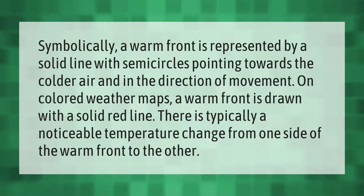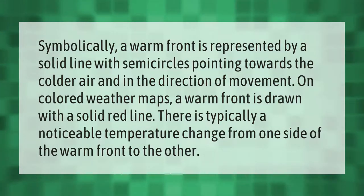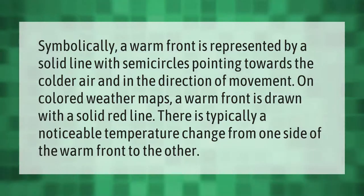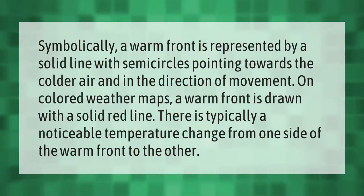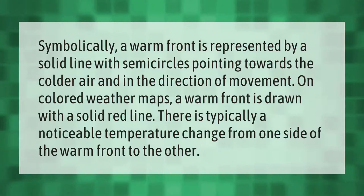Symbolically, a warm front is represented by a solid line with semicircles pointing towards the colder air and in the direction of movement. On colored weather maps, a warm front is drawn with a solid red line. There is typically a noticeable temperature change from one side of the warm front to the other.